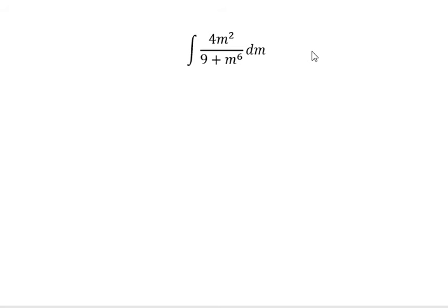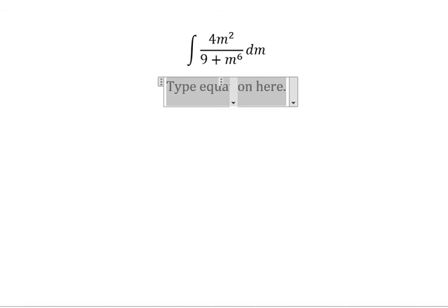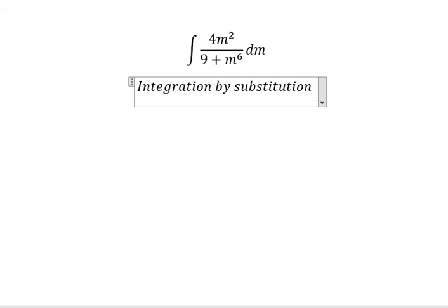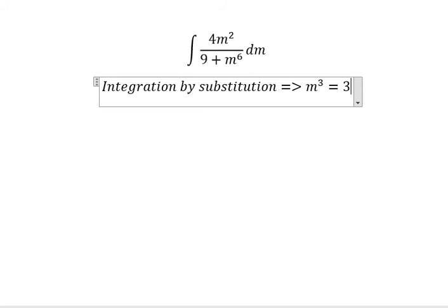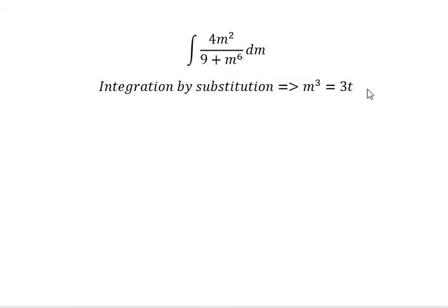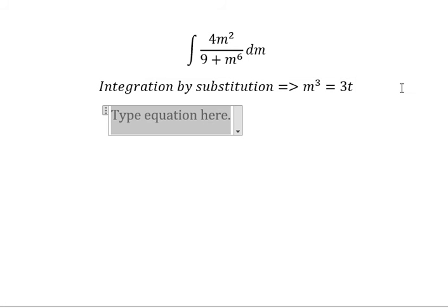We need to use integration by substitution. So in here, m to the power of 3 equal to 3t. Then we do first derivative for both sides. You will get 3m squared dm equal to 3 dt.